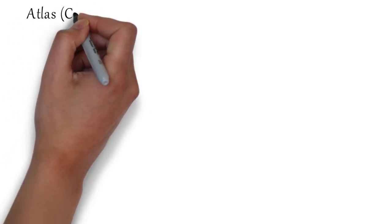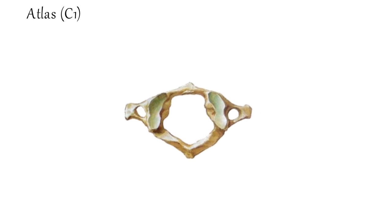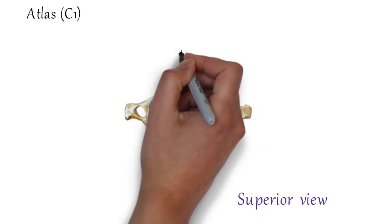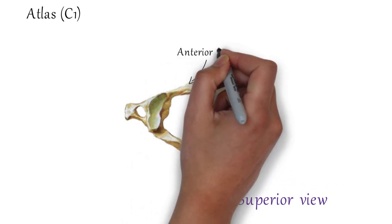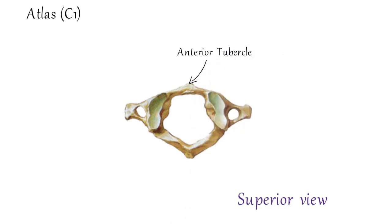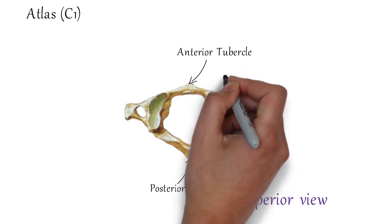Now let's talk about atypical first cervical vertebrae, which is also known as atlas. This is the anterior tubercle. This is the posterior tubercle. It has a short anterior arch and long posterior arch. It forms about two-fifths of the ring but lacks vertebral body and spine.